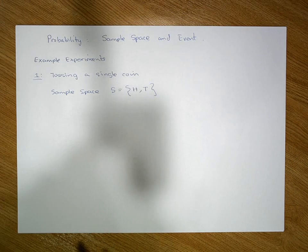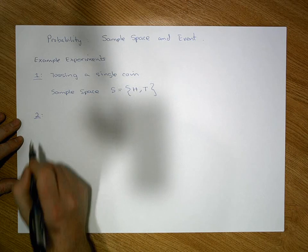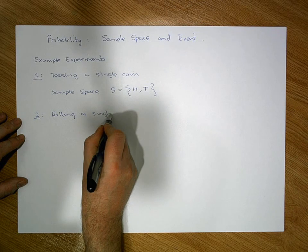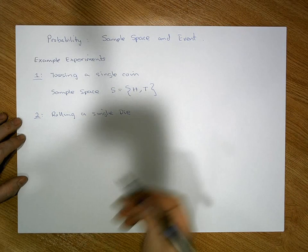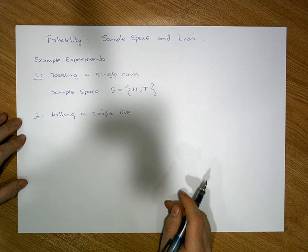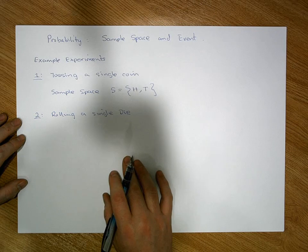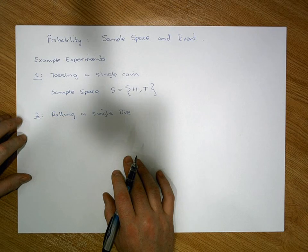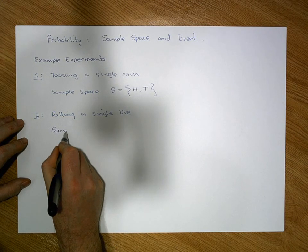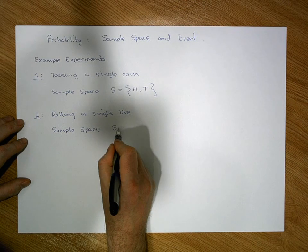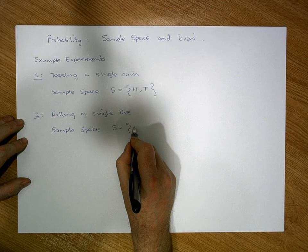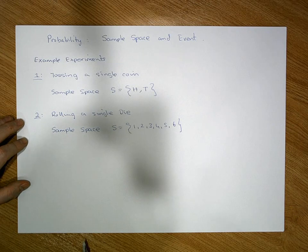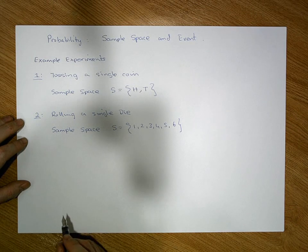Let's consider another experiment: rolling a single die. When we roll a six-sided die, the possible outcomes with respect to the value shown face up are the numbers 1, 2, 3, 4, 5, or 6. So in this case, the sample space S is simply the face values of the die: {1, 2, 3, 4, 5, 6}.